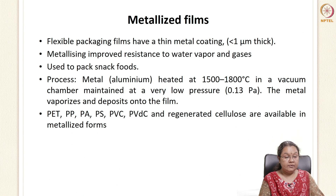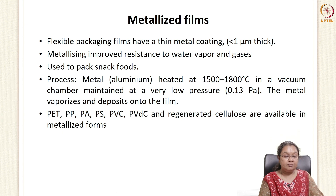Metallized films are flexible packaging films with a thin metal coating, generally less than one micron in thickness. This coating improves resistance to water vapor and gases and is used to pack snack foods. The process involves heating the metal to 1500–1800 degrees centigrade in a vacuum chamber at very low pressure, causing the metal to evaporate and deposit on the film. This can be done on PET, polypropylene, PA, polystyrene, PVC, and regenerated cellulose films.